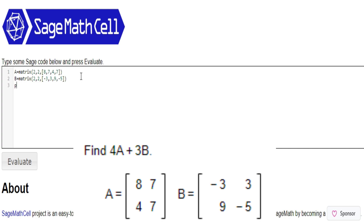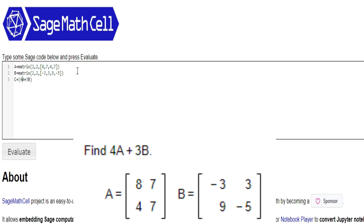There are a few ways you can do it in SAGE — either you can do print, or you can do show. I personally like show just because it makes it look a lot cleaner. There's actually three ways to do it. You could do C equals parentheses 4 times A plus 3 times B. Note that in SAGE you can't just write 4A plus 3B — the computer requires explicit multiplication, so you have to do 4 times A plus 3 times B. Then do show C. Or simply do show parentheses 4 times A plus 3 times B.